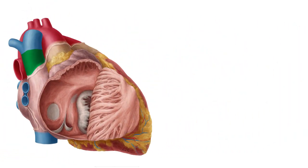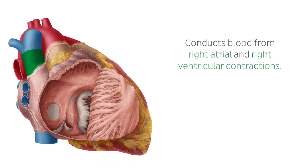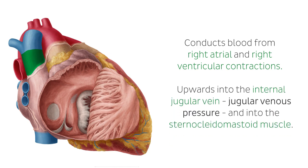There is no valve that divides the SVC from the right atrium. Contractions from the right atrium and right ventricle conduct blood upwards into the internal jugular vein, which is measured as the jugular venous pressure, and into the sternocleidomastoid muscle.